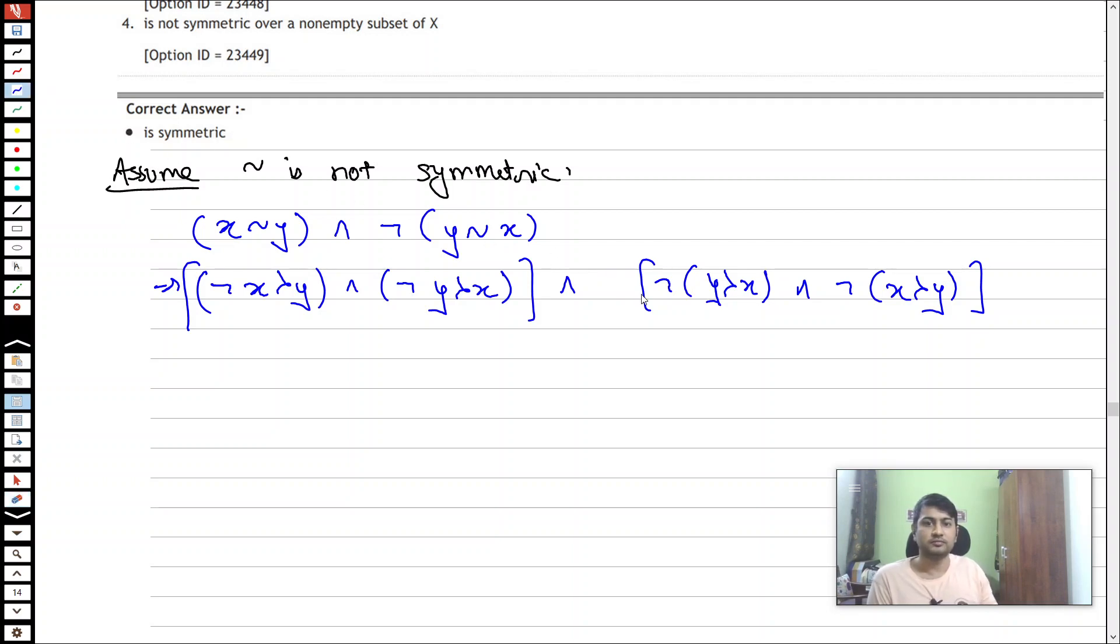Now when I take this negation inside, this negation will cancel out. So negation of negation of these things. So this implies negation of x preferred to y and negation of y preferred to x.